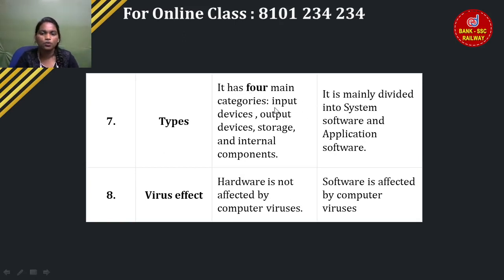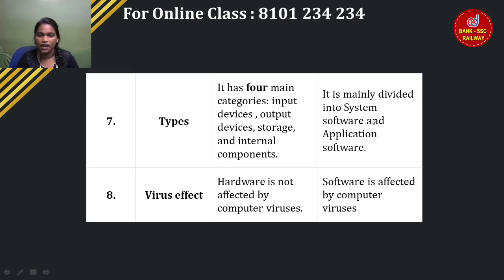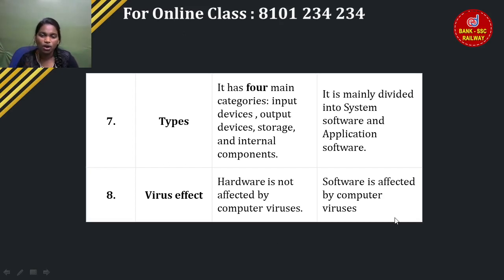Hardware types are input devices, output devices, storage devices, and internal components. Software is mainly divided into system software and application software. Regarding virus effects: computer viruses affect software. Hardware is not affected by computer viruses. If a virus happens on your mobile device, you can delete the app.